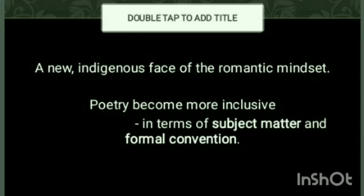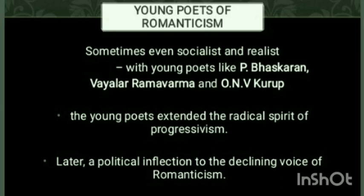The specialties of these romantic poets were that they used a new, indigenous, native kind of romantic writing and experimented with a varied number of themes and subject matters, employing formal conventions. There was also a set of younger poets of Romanticism who showed socialist or realist tendencies through their writings — poets like P. Bhaskaran, Vayala Ramavarma, and O. N. V. Kurup. They had a political inflection toward left-wing politics with a progressive spirit, extending a radical spirit of progressivism through their writings.